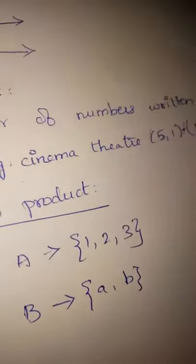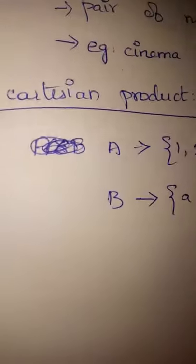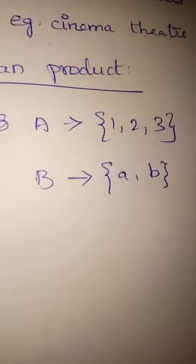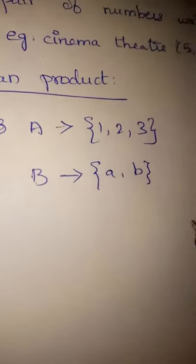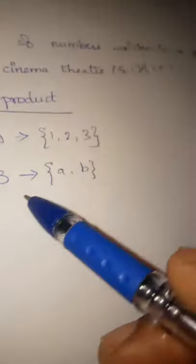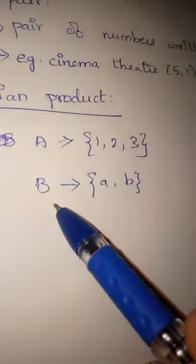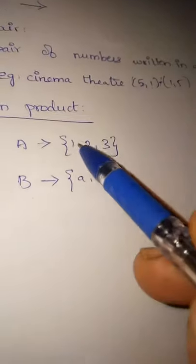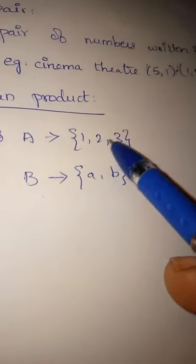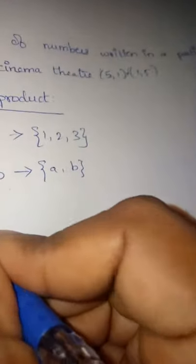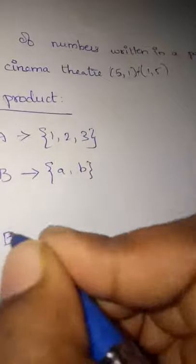Next, we will see Cartesian product. Let A be a set of numbers: 1, 2, 3. Let B be a set of variables: A, B. So A cross B — what does this mean? This is the ordered pair Cartesian product: 1 into A, 1 into B, 2 into A, 2 into B, 3 into A, 3 into B.